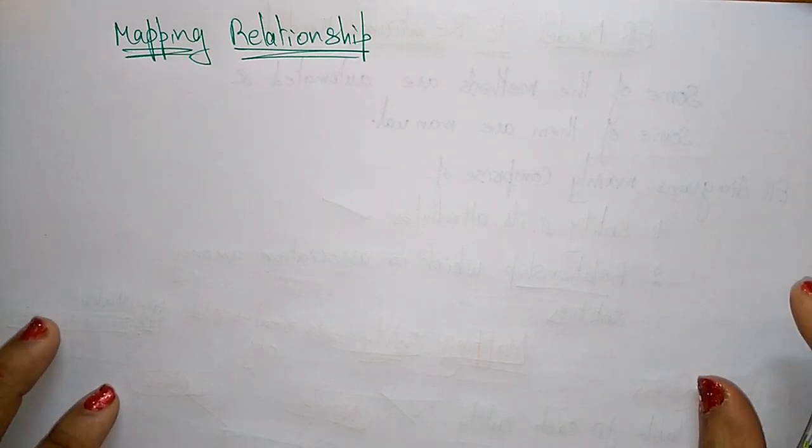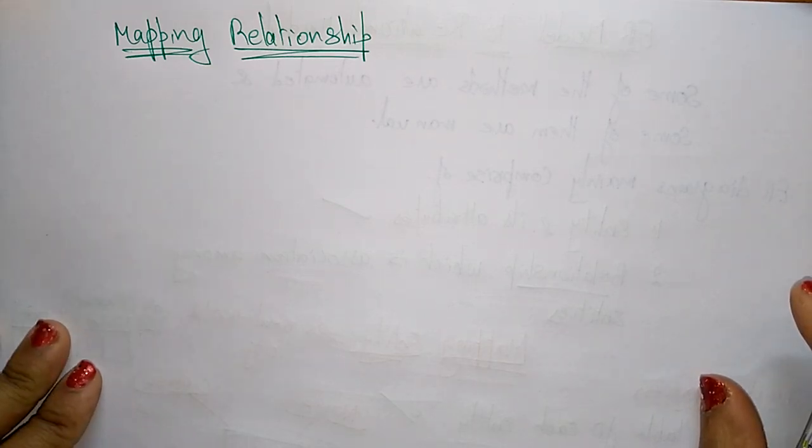Friends, let us continue with the ER model to relational model. In the previous video, I explained about the mapping entity. Now, let us see the mapping relationship.